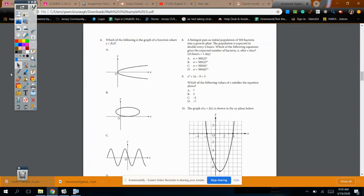Number 8. A biologist puts an initial population of 500 bacteria into a growth plate. The population is expected to double every 4 hours. Which of these tell how many bacteria there would be after x days? This one's a hard one. I think you'll miss this one. Look what's the same in all these. The 500 is that initial condition on A times B to the x. So that is the initial condition.